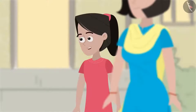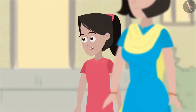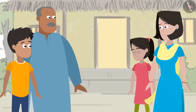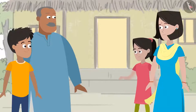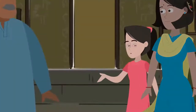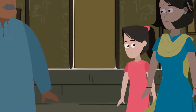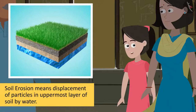See how the water wears away the soil as it flows. But the soil that had plants growing did not flow away with the water. So does this mean that the roots of the plants hold the soil together even in strong winds? Yes, you are right, Sanya. If we plant more trees, the soil will retain moisture and water or air will not be able to wear away the soil. Friends, this is called soil erosion — we had read about it in class 7. Soil erosion means displacement of particles in the uppermost layer of soil by water.